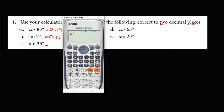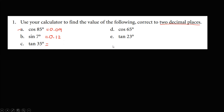For tangent 35 degrees, we have tangent 35 degrees equals — that's 0.70. So tangent 35 is 0.70.